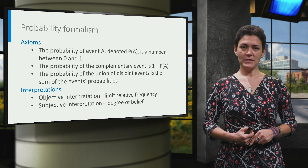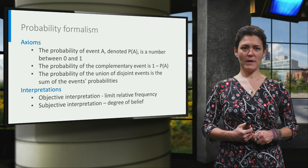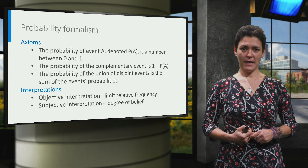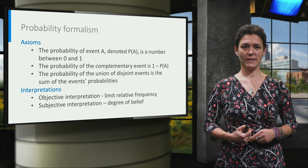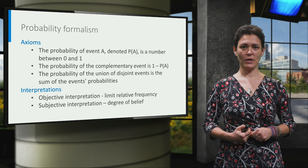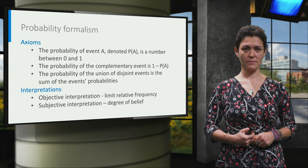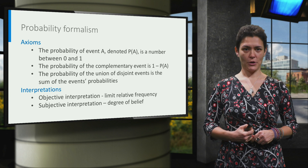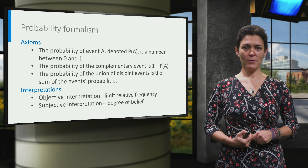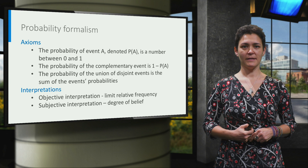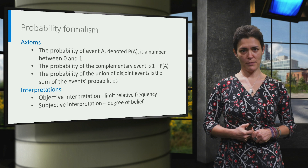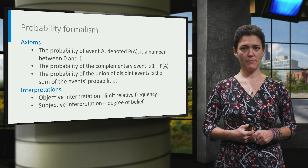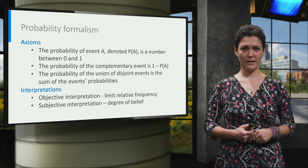The axioms will specify formal properties of uncertainty and the interpretations, also called operational definitions, will connect the terms in these axioms with observable, measurable phenomena. While different formalisms for encoding uncertainty numerically are proposed, none has the power, axiomatic and empirical validity of probability theory.